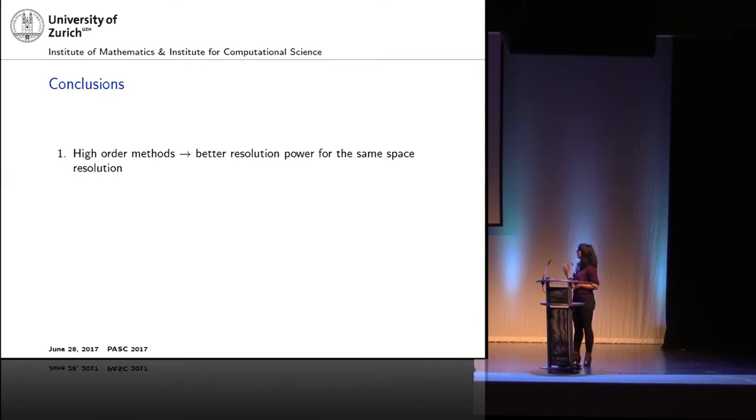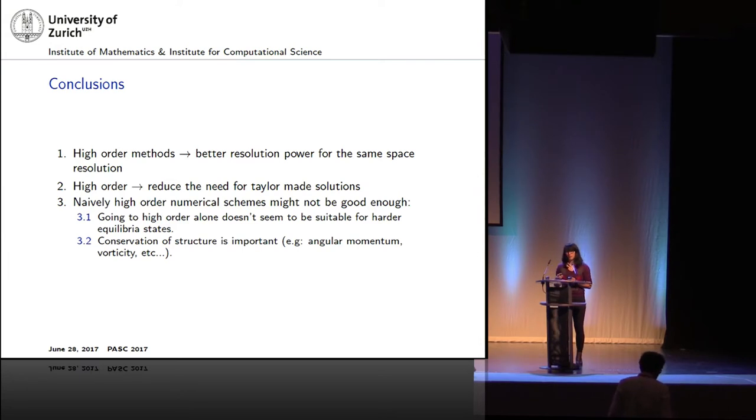These are my conclusions. First, higher order methods, we can get a better resolution for the same spatial resolution. Also, we hope that with higher order methods, we can have less tailor-made solutions, which means that the codes can be more general, and tackle a big variety of problems, without having to make codes which are very specific. However, one of the results that we got from the well-balanced study is that naively just going to higher order might not be good enough. It's always good if we know something about our system to try to exploit the properties of the system. Something that I found useful, but that it was hard to find, was some benchmarks to test some of these properties are not very well known. I think there's space for the study of analytical solutions.